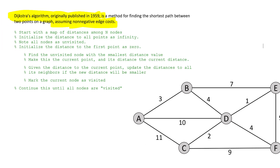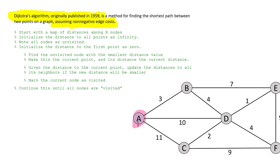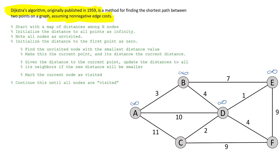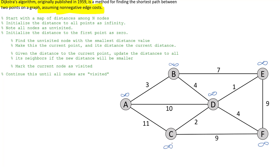Basically what you've got is a map with nodes. The way this is drawn, you can safely assume it costs three to go this way and three to go that way — it's a bidirectional graph. So all of these nodes are currently infinity away: infinity, infinity, infinity, infinity, infinity, infinity, and infinity. They're all unvisited; we haven't been anywhere yet.